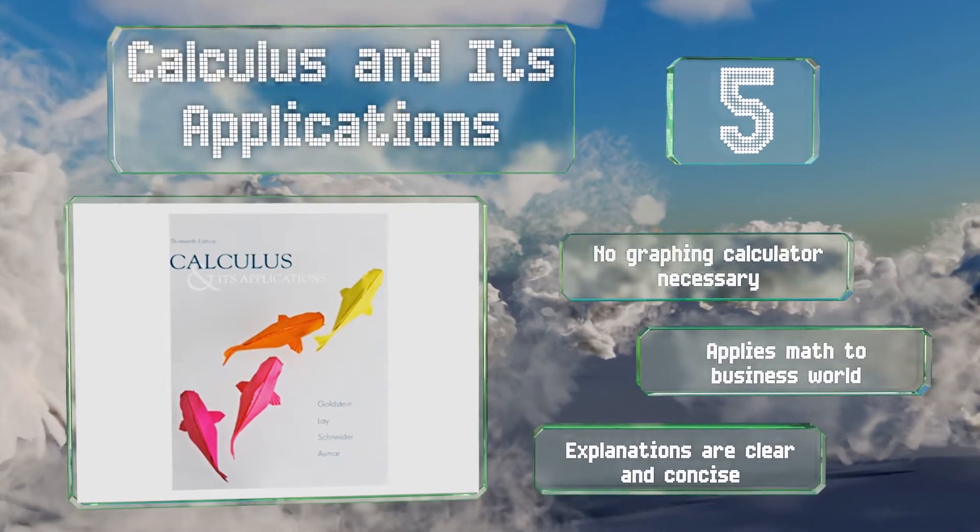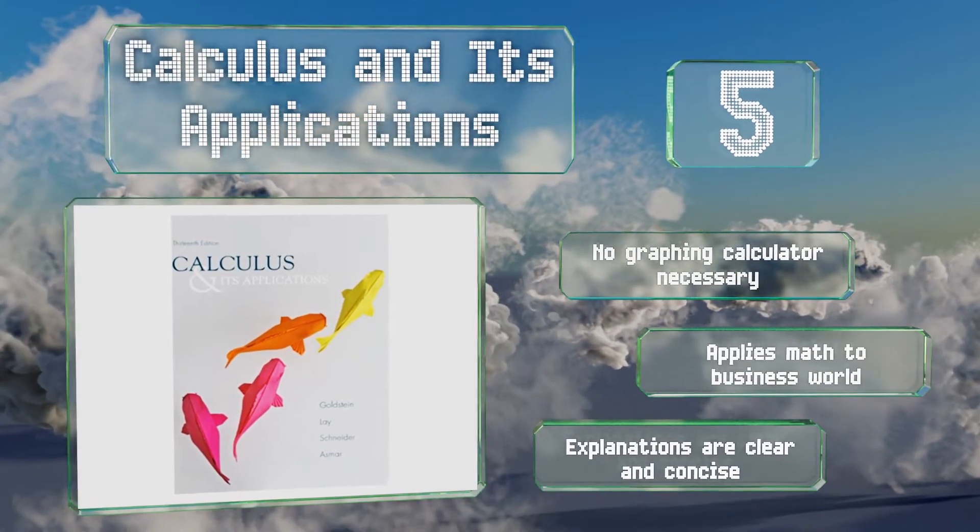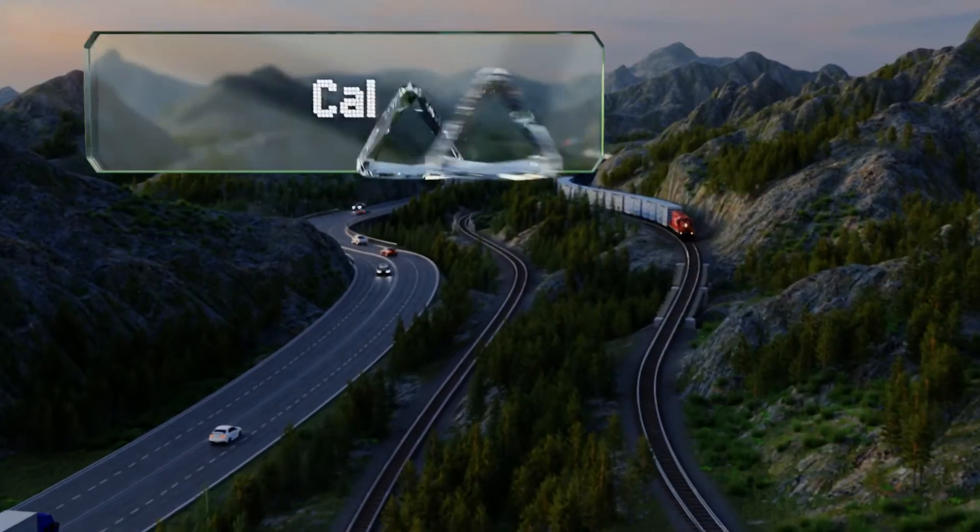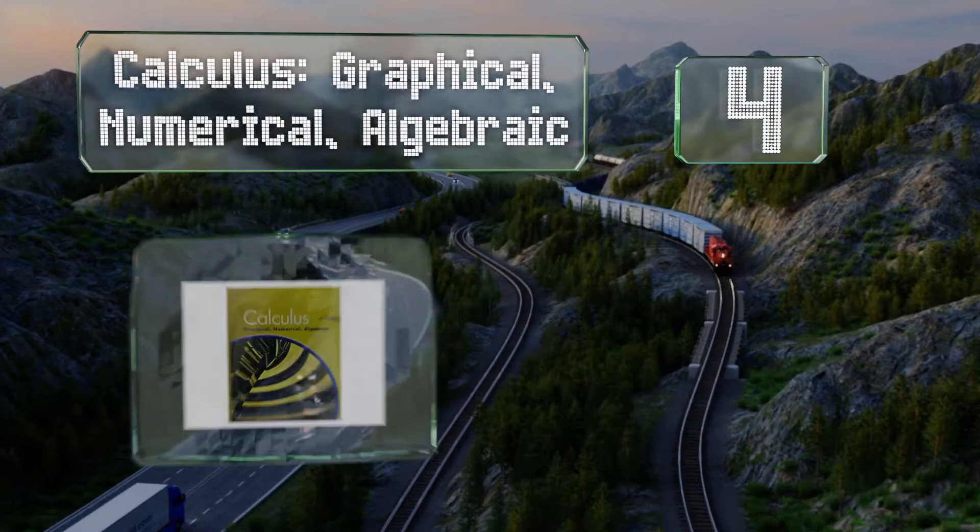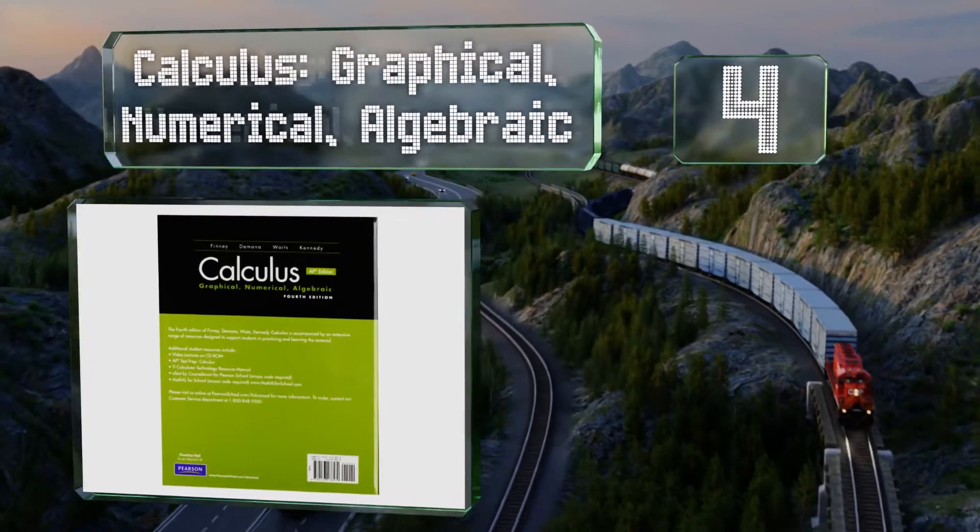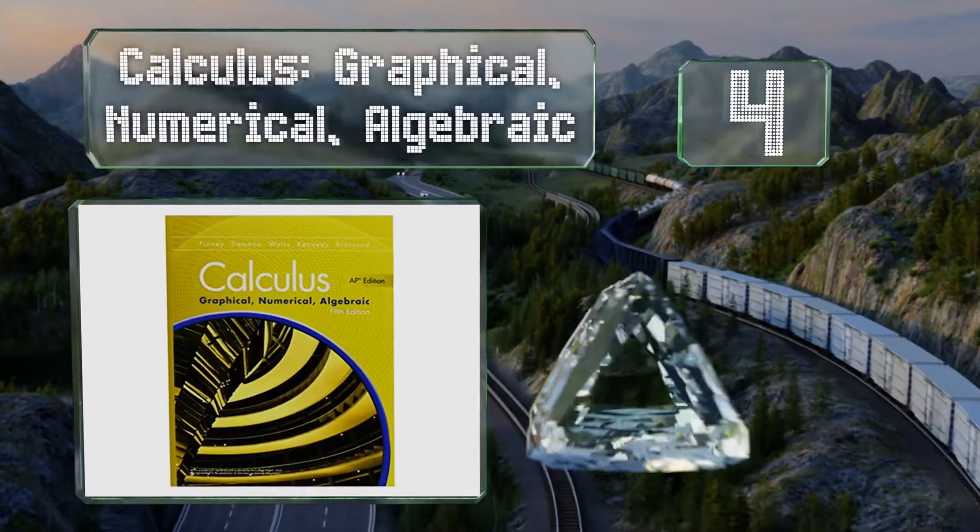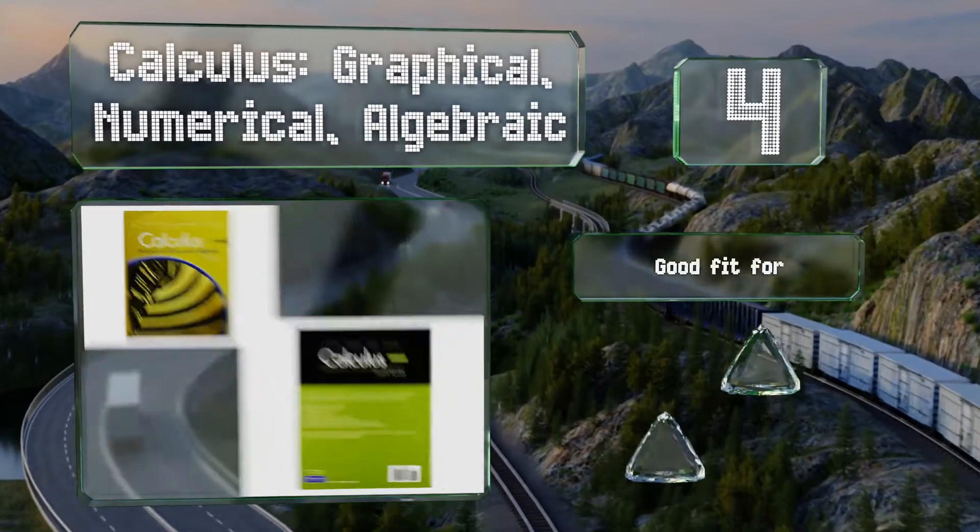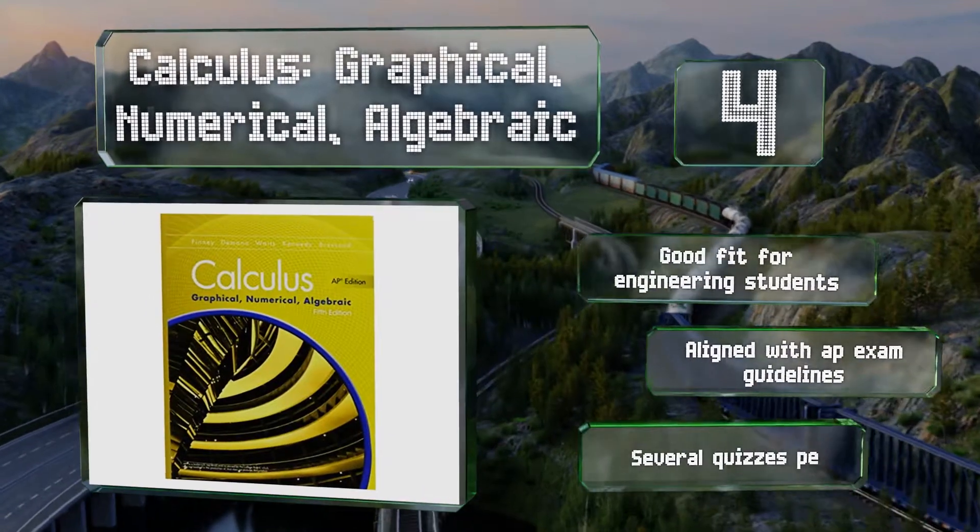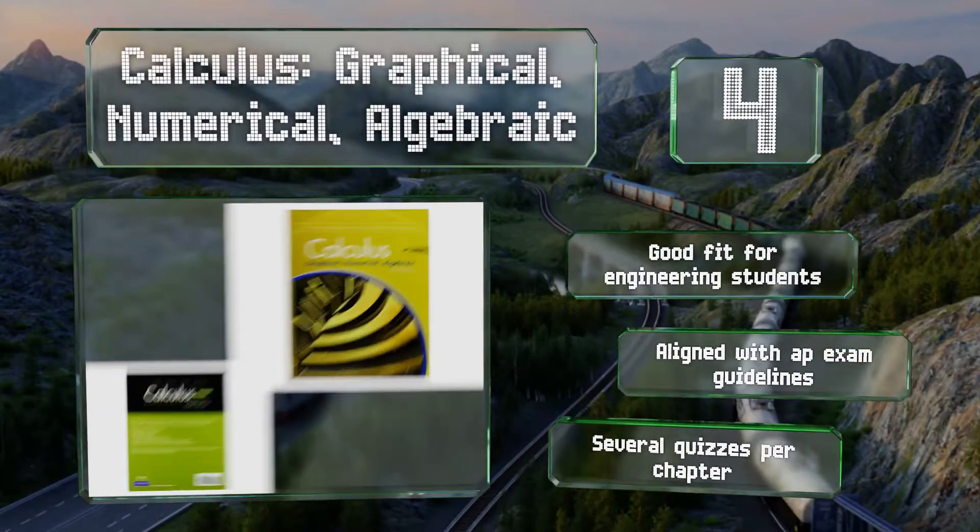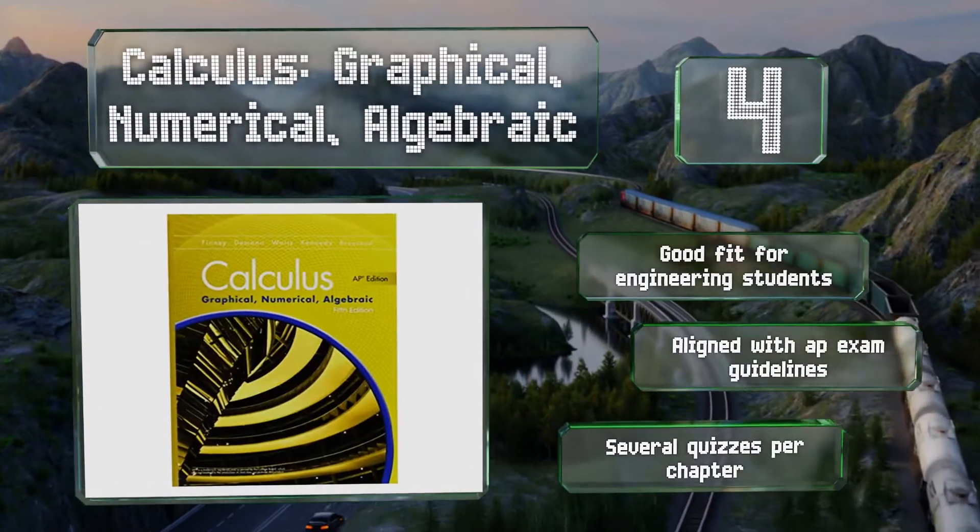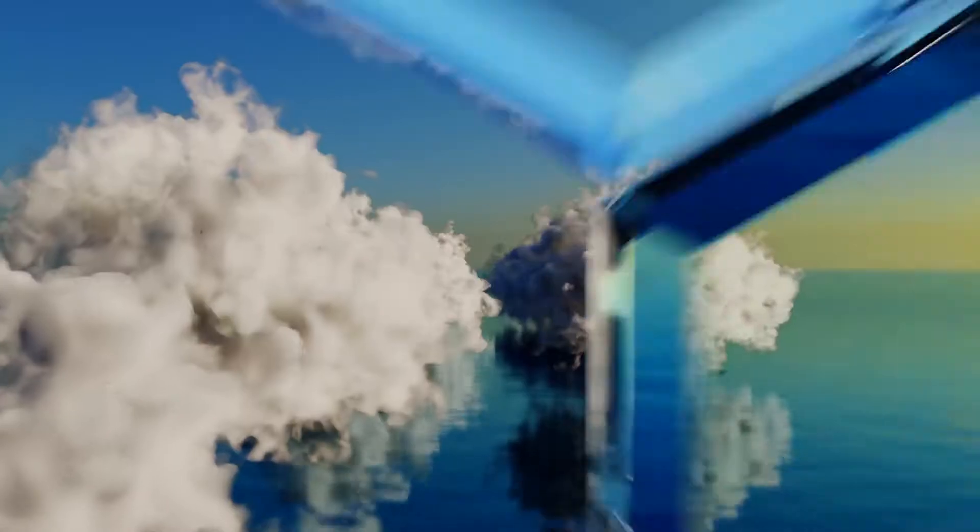At number 4, if you prefer textbooks that get straight to the point, Calculus Graphical Numerical Algebraic doesn't bury the concepts in flowery language or extended examples. It keeps the illustrations simple too, which makes it less likely to confuse beginners. It's a good fit for engineering students and is aligned with AP exam guidelines. It includes several quizzes per chapter.